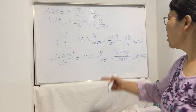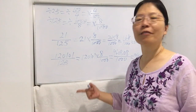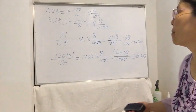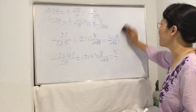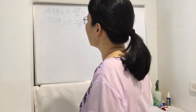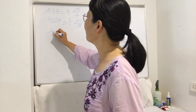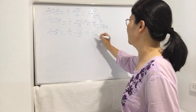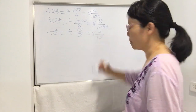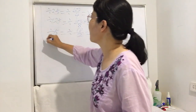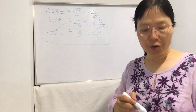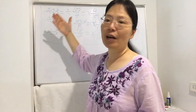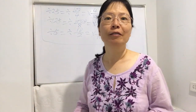Now let's make a conclusion. Today we shared three special techniques: divided by 5 means times 2 divided by 10; divided by 25 means times 4 divided by 100; divided by 125 means times 8 divided by 1000. If you remember these three special tricks, you can very quickly work out any number divided by 5, 25, or 125.